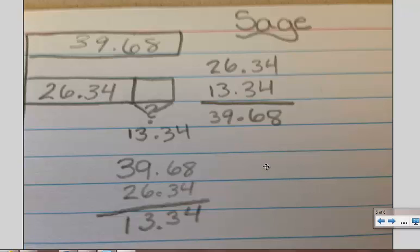Now this person, Sage, drew a comparison tape diagram where we know the whole is worth this much. Her bars are not touching, and I love that hers are drawn proportionally. She shows that 26 is bigger than 13. Very well done.